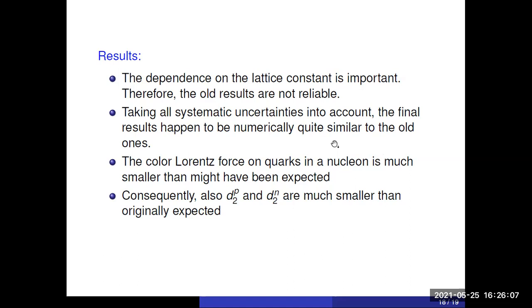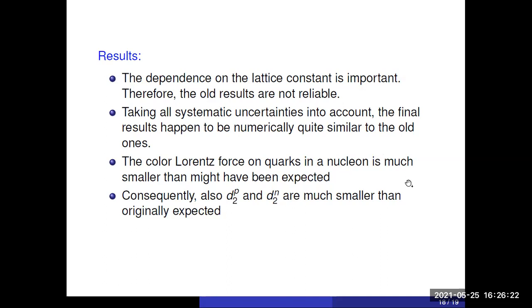So we have similar results, but now we control the systematic error and there we are really sure of what we did. What one also finds is therefore that the color Lorentz force on quarks is surprisingly small and that that is the reason why these D2s are much smaller than originally expected.